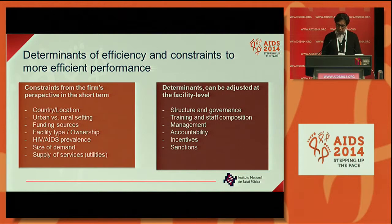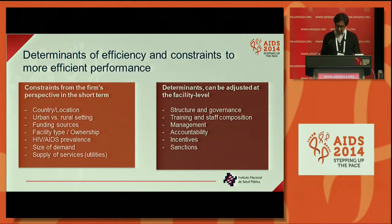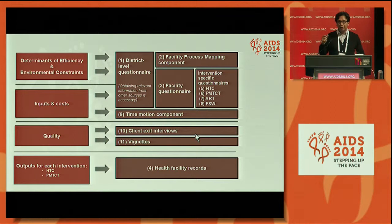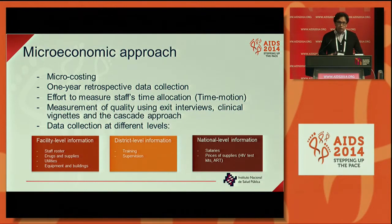In terms of determinants, we measured: structure and governance at the facility level, training and staff composition, management characteristics, management practices, levels and types of accountability, and incentives and sanctions faced by staff. Each square in our data collection framework represents one specific questionnaire — it was a fairly complex data collection process. We used a micro-costing approach at the facility level over one year.